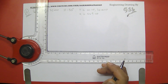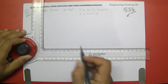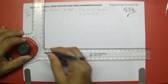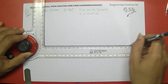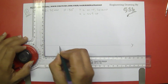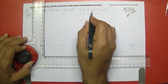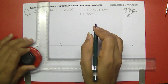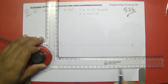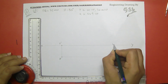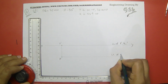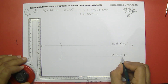First, I'll draw the reference line. I'll take this book apart so I can draw clearly. I draw the reference line and locate the position of P. Since P is on the HP, P-dash falls on the XY line, and the distance in front is 30mm, so I take 30mm below XY for P. This gives us the locus line of P-dash and Q2-dash, and the locus line of P and Q1.